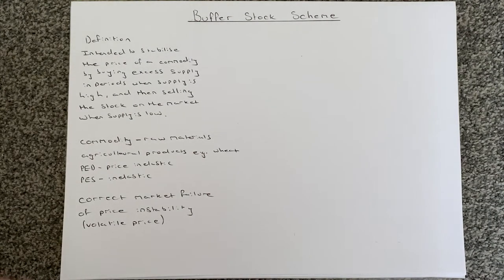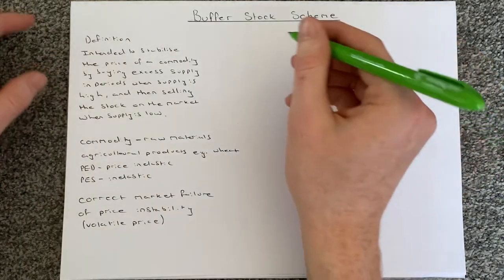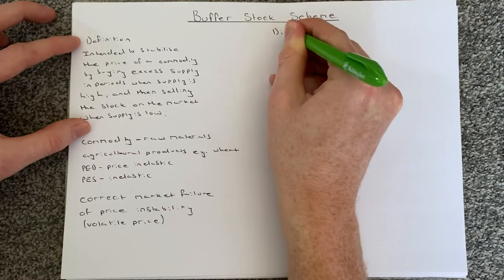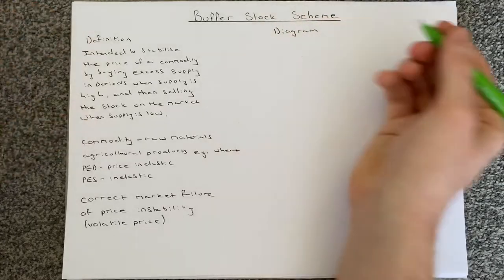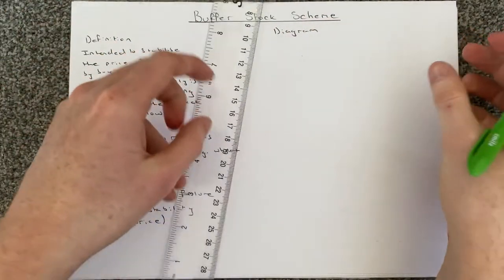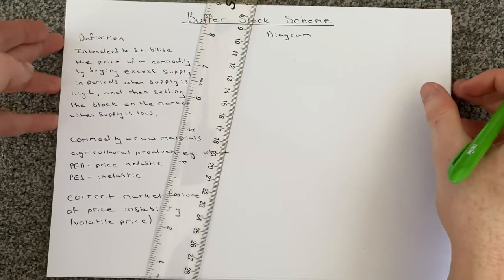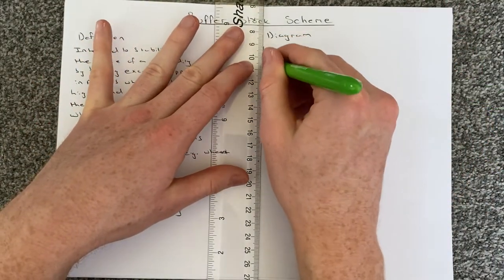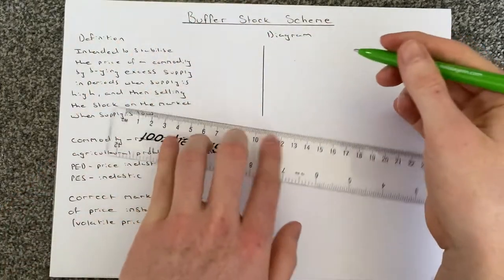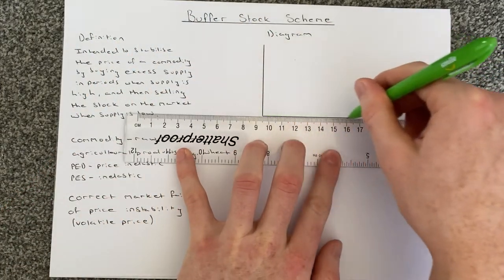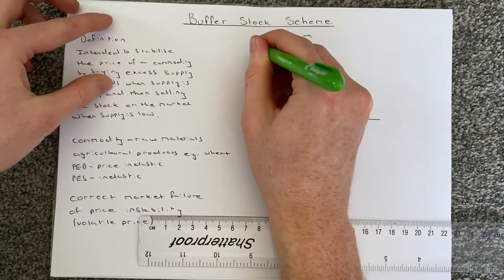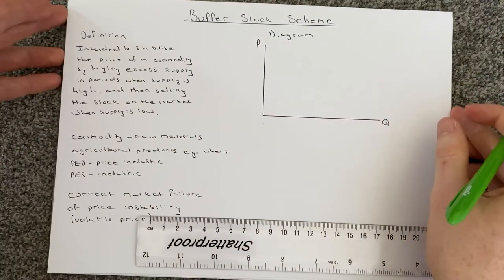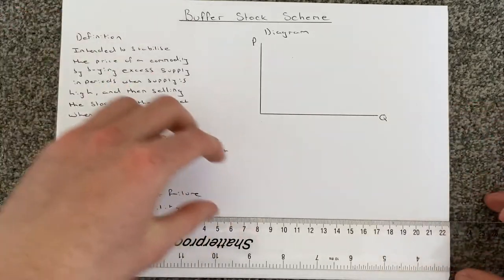So let's now have a look at drawing our diagram for a buffer stock scheme. This is probably one of the more technical diagrams we're going to draw, so it's really important we understand how to draw it. Like all diagrams, we're going to start off with our axes — price and quantity. Nothing new there.